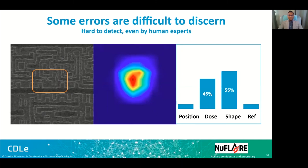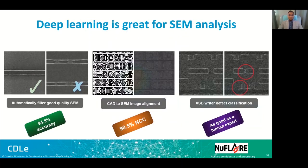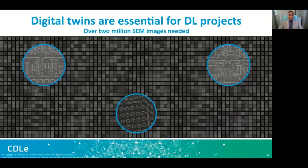With this I would like to conclude my presentation by saying that deep learning is extremely powerful for SEM analysis. The three tools — SEM image filtering, CAD to SEM alignment, and the defect classifier — show extremely good results. It was only possible because we could generate millions of data points covering different types of printing conditions, whether errors or bad SEM images, all made possible by the digital twin. The digital twin itself also used deep learning to improve it, so deep learning combined with the digital twin is extremely powerful for SEM analysis. Thank you for listening.